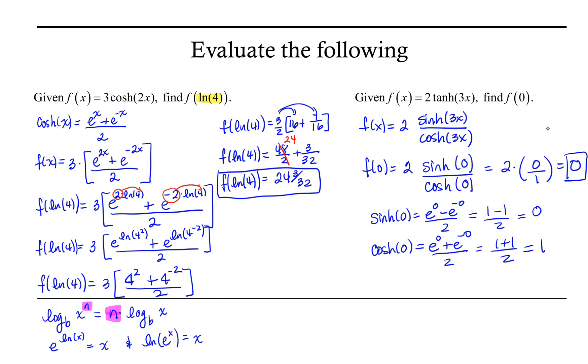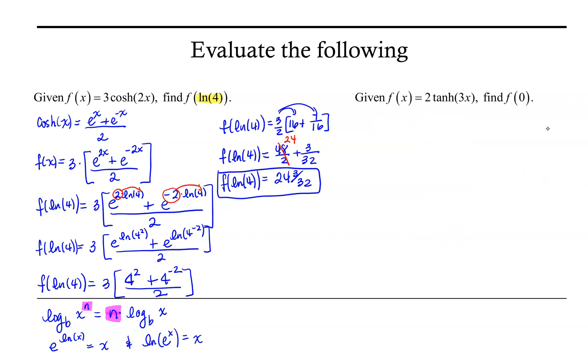Now let's do this again, but we will use the exponential form. So if I remember the exponential form for tanh, rather than using sinh and cosh, I could do f of x equals 2 times e to the 3x minus e to the negative 3x over e to the 3x plus e to the 3x.